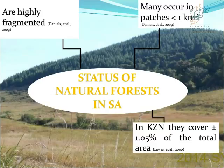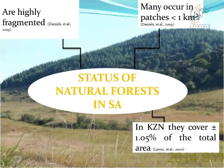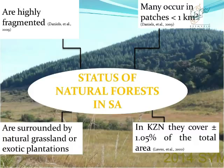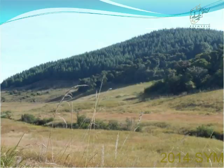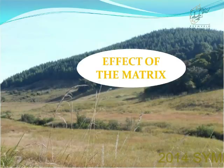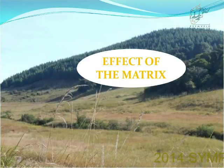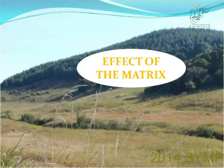In KwaZulu-Natal, the province where our study took place, natural forests cover approximately 1.05%. Yet KwaZulu-Natal is the province that still contains the highest percentage of South Africa's natural forests. These natural forests are either surrounded by grassland or exotic plantations. The matrix — the most dominant vegetation surrounding the patch — in this case is the grassland as well as the pine plantation.